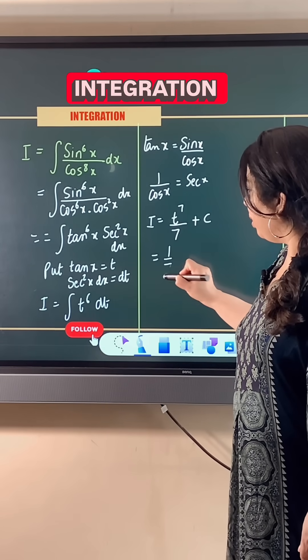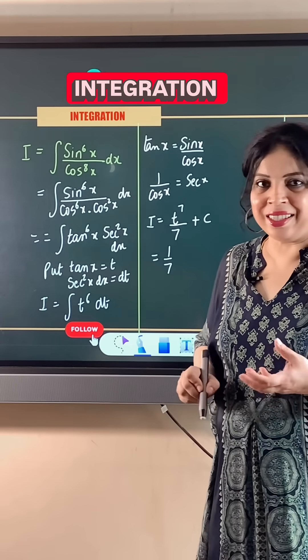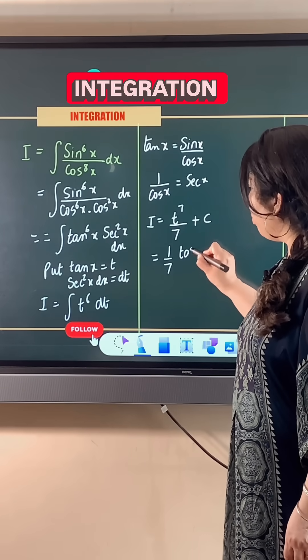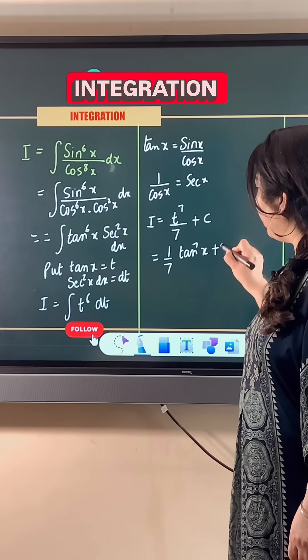When we back substitute the values, our final answer is 1 upon 7 tan raised to power 7x plus c.